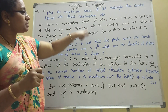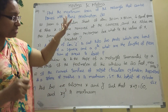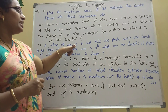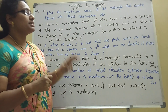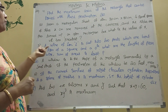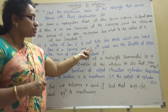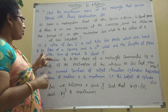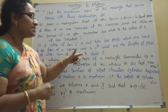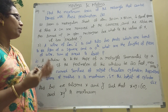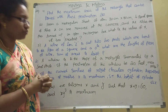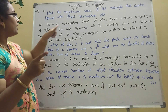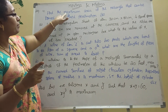Third problem: A wire of length L is cut into 2 parts which are bent into the form of a square and a circle. Find the lengths of the pieces of wire such that the sum of the areas is least — least means minimum. This wire problem is very important.